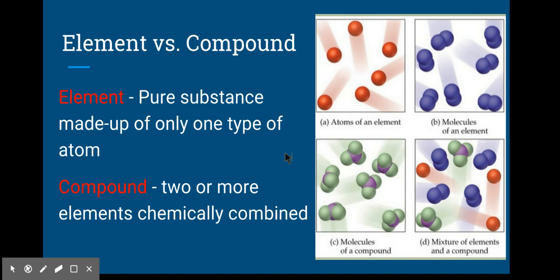So an element is a pure substance made up of only one type of atom. What that means is if you look at these images over here, you notice that we have a bunch of red circles, and these are meant to represent atoms. Because they're all red, they're showing that it's the same element, so these all have the exact same properties as one another, being the same element.